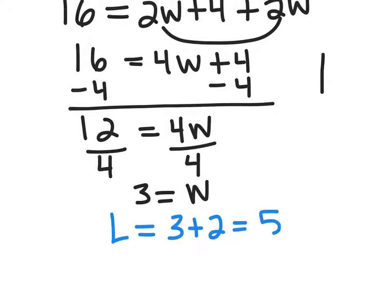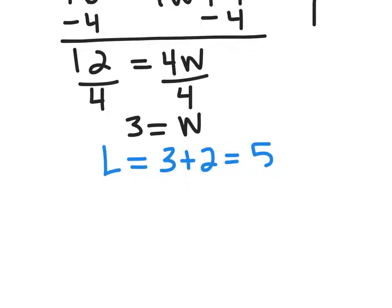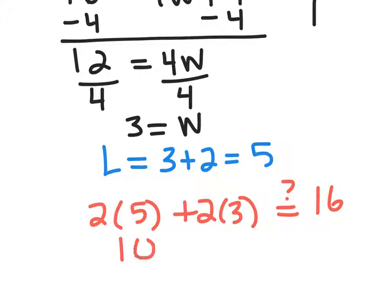Now let's see if that works. So our perimeter is 16. So this is our check. So if I do 2 times 5 plus 2 times 3, does it equal 16? So 10 plus 6 does equal 16. So it's right.